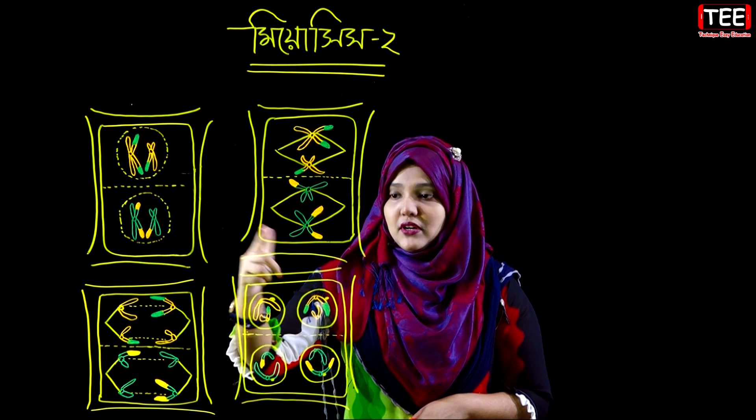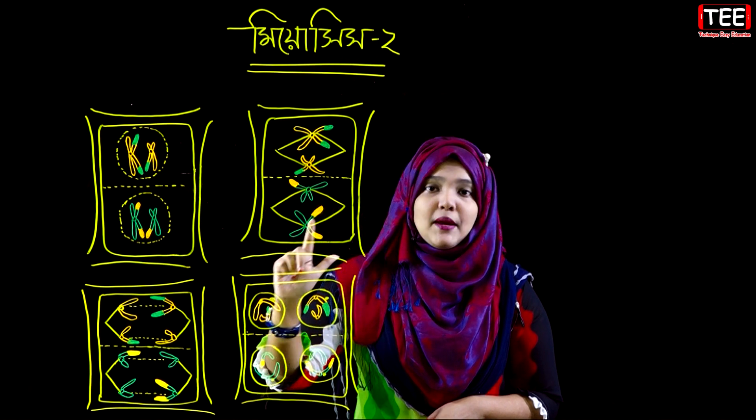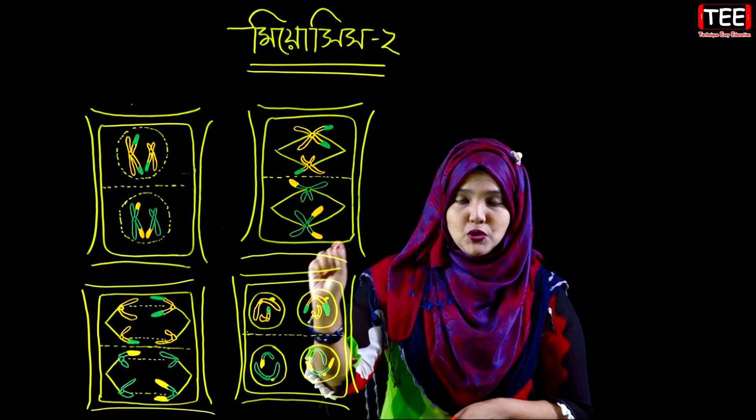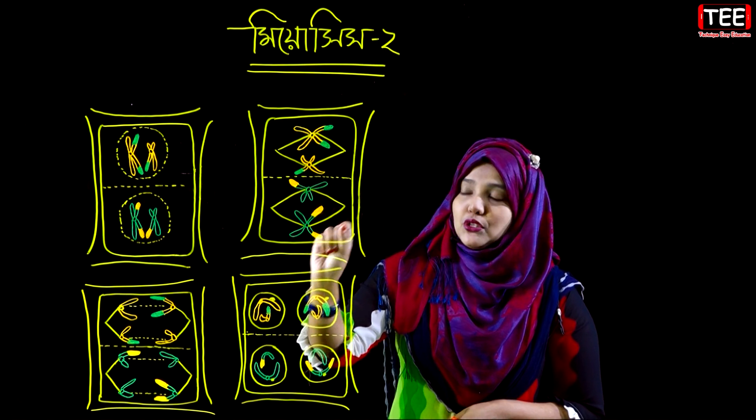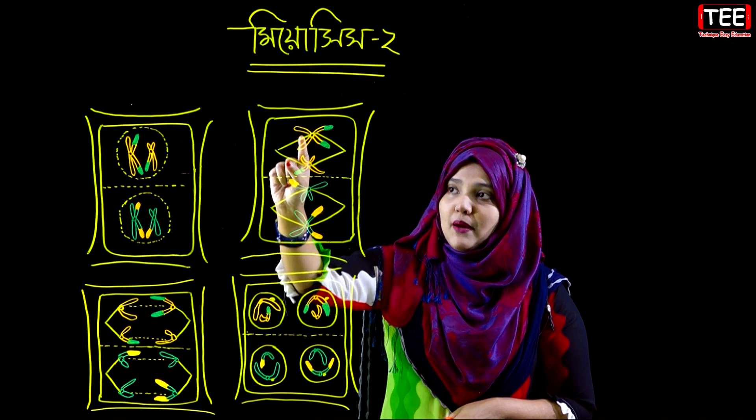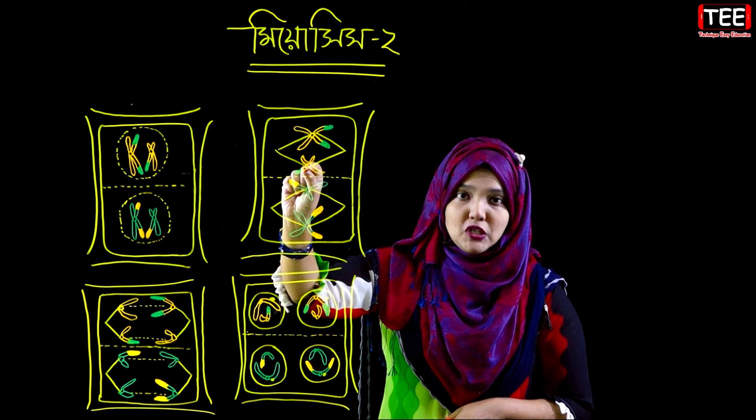In Metaphase 2, we see that the chromosomes are arranged at the metaphase plate. The potassium follows that arrangement. There is the spindle apparatus forming.